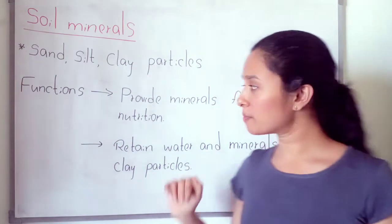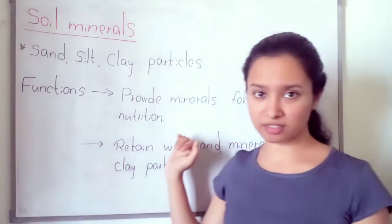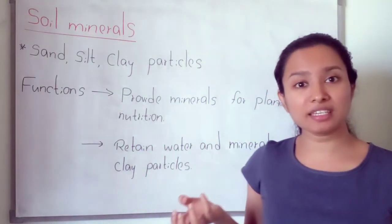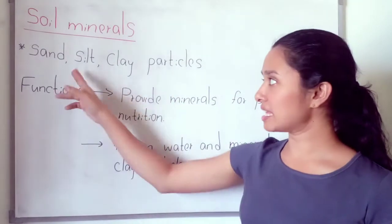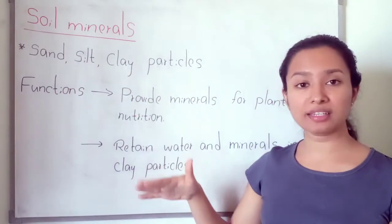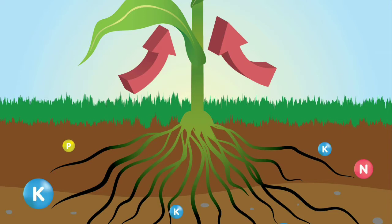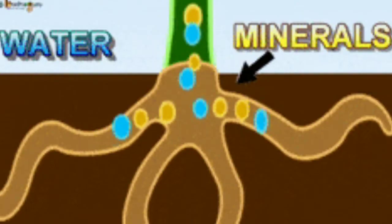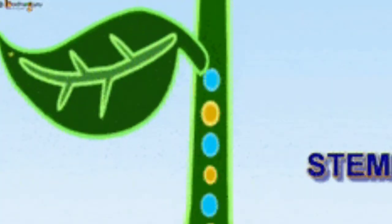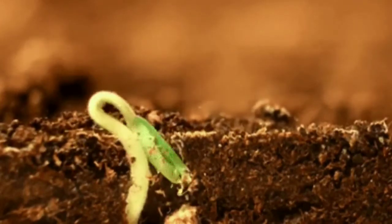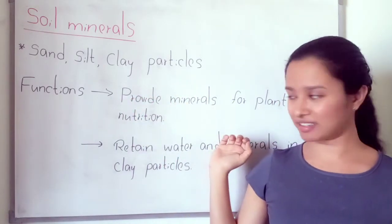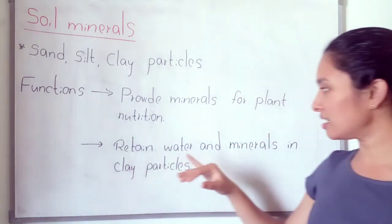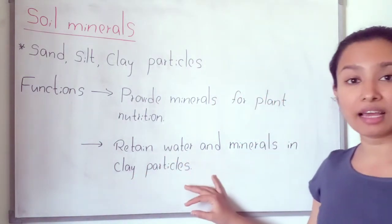The first function is to provide minerals for plant nutrition. Plants need nutrients for their growth, and the minerals — sand, silt, and clay — provide minerals for the growth of plants. For example, nickel, cadmium, cobalt, copper, and zinc are the minerals provided by these sand, silt, and clay particles.